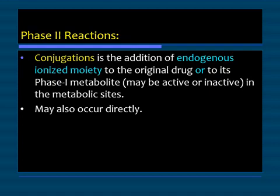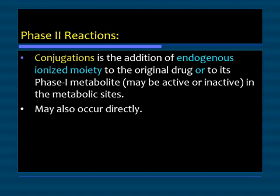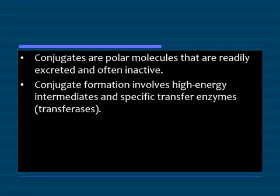The phase one reactions were oxidation, reduction, and hydrolysis. Phase two reactions are basically the conjugation reactions — also known as synthetic reactions. In conjugation, there is addition of an endogenous ionized molecule to the original drug or to its phase one metabolite. Phase two may also occur directly, but usually follows phase one. Endogenous substances bind to the metabolite, making it more ionized and water soluble for excretion, which is the main aim of biotransformation. These conjugates are polar molecules that are readily excreted and are often inactive.